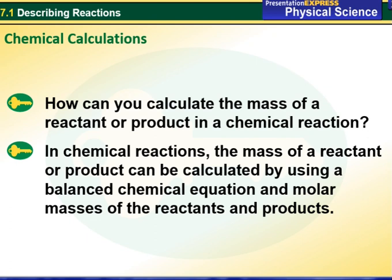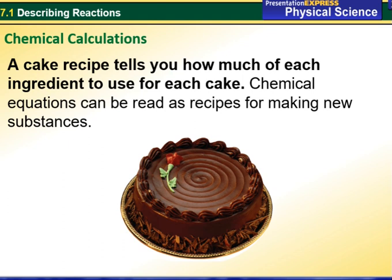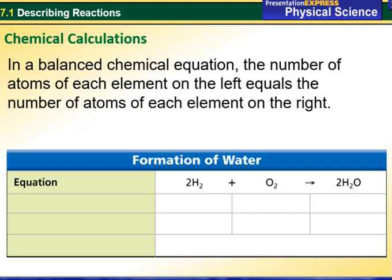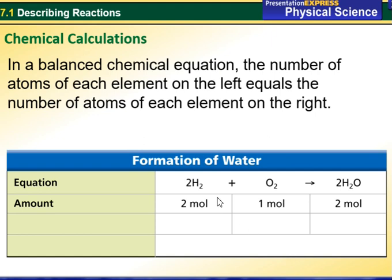Chemical reactions: the mass of a reactant or product can be calculated by using a balanced chemical equation and molar masses of the reactants and products. Those are the chemical calculations that we want to talk about.